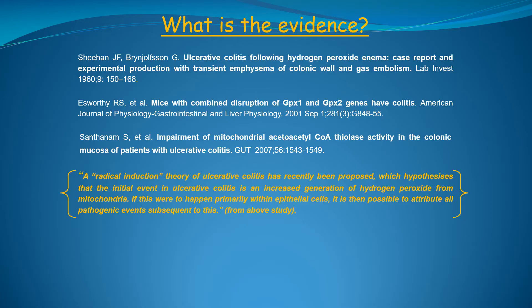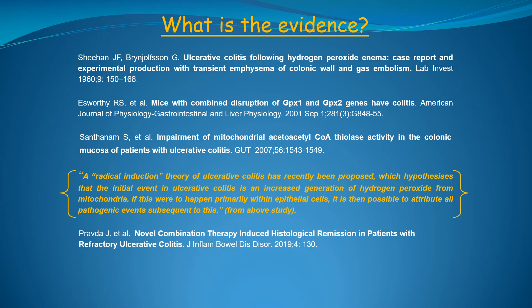The authors of the study concluded that, based on the data, it is possible to attribute the pathogenesis of ulcerative colitis to excess hydrogen peroxide. This is a logical conclusion based on the experimental evidence. Finally, if colonic hydrogen peroxide is truly the cause of human ulcerative colitis, then we should see dramatic improvement with a therapeutic intervention that eliminates excess colonic hydrogen peroxide. This was observed in a case series report of 36 patients with refractory ulcerative colitis, in which 85% achieved complete histologic remission after several weeks of treatment.